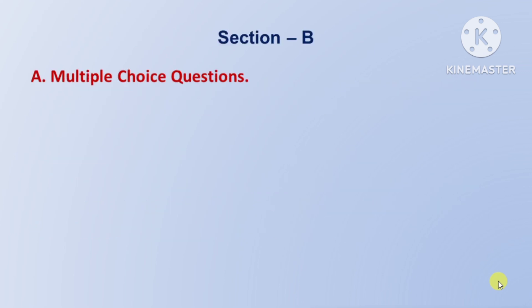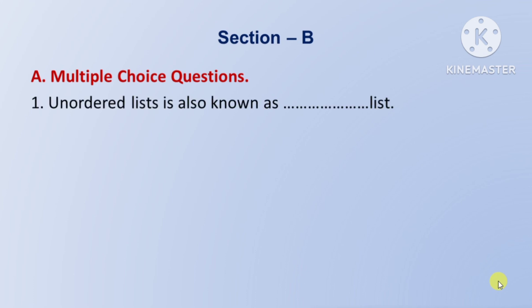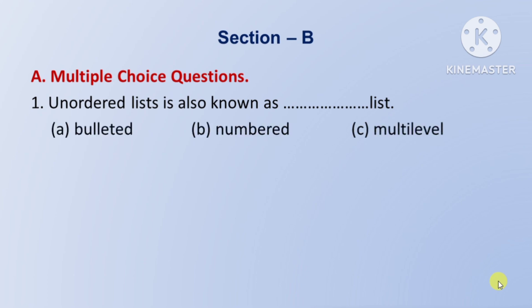See Section B, Multiple choice questions. First question: unordered list is also known as which list — unordered list ko aur kis naam se jaana jaata hai. Option A: bulleted list. Option B: numbered list. Option C: multi-level list. Toh iska right answer hai Option A: bulleted list.